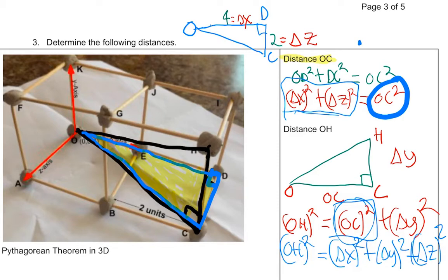That's the Pythagorean theorem in three dimensions. And believe it or not, it extends to four dimensions, five dimensions — that's the whole field of analytics. Once you get into four dimensions, it's not about physical distance anymore; you're comparing metrics. Distance represents how different things are. If you have four types of one object and compare them to another four objects, you can use the fourth-dimensional Pythagorean theorem to compare how different something is.